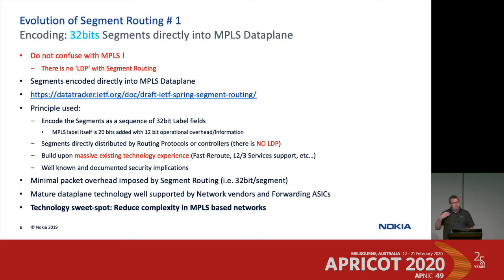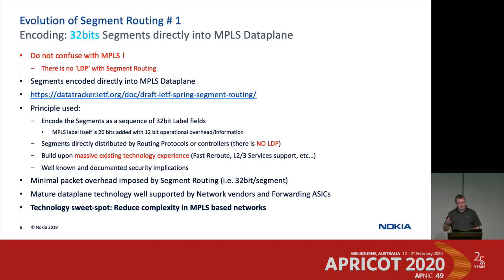I'm going to speak about the evolution of segment routing in four phases. The first phase, encountered a few years ago, is 32-bit segments encoded as MPLS labels. Even though I say MPLS label, the real label space is 20 bits with 12 bits of overhead for things like type of service and bottom of stack. From the data plane perspective it looks almost identical semantically to an MPLS packet, which is very good because everything hardware has been doing for a very long time can be reused with 32-bit segment routing.